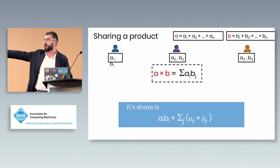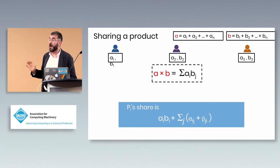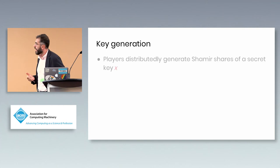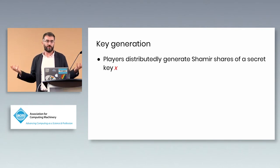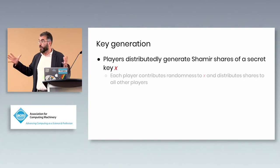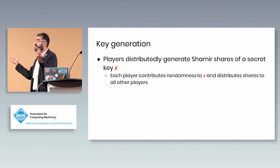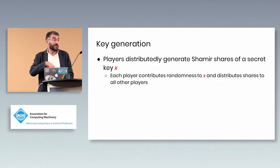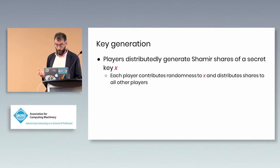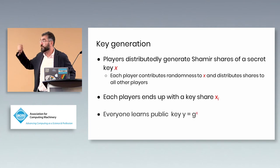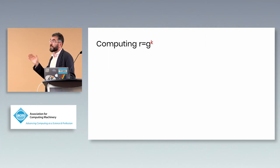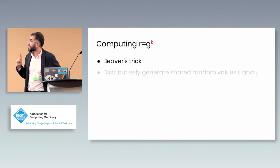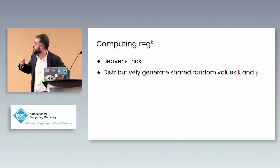Returning to DSA: for key generation, every player generates a random value and shares it with everyone else. We add all received shares to get shares of a random secret x that nobody knows individually. We then all compute g^x using interpolation in the exponent — each party reveals g^{x_i}, and a linear combination yields g^x. Similarly, g^k is computed the same way.